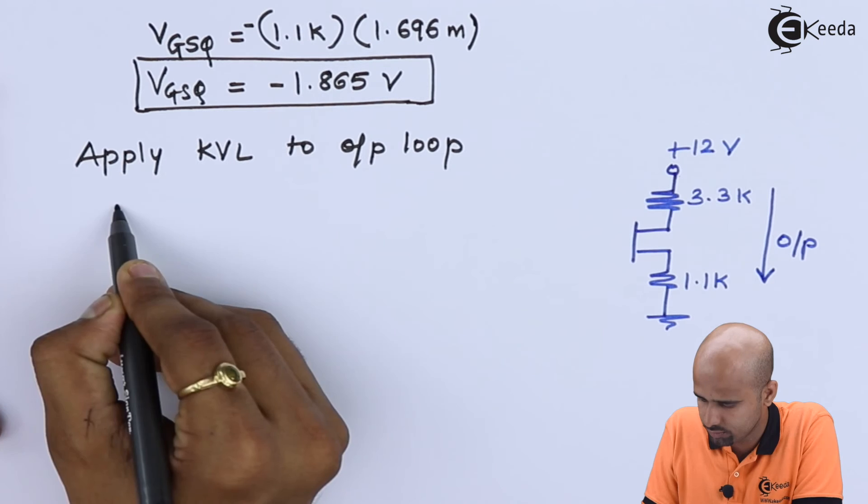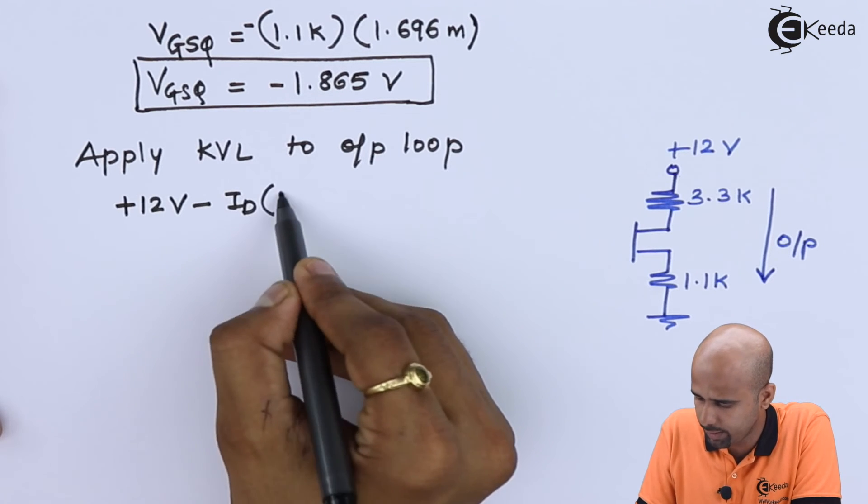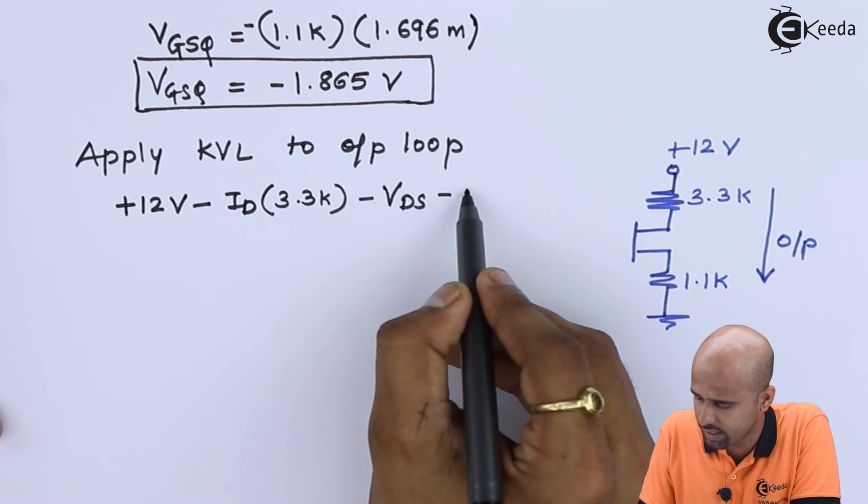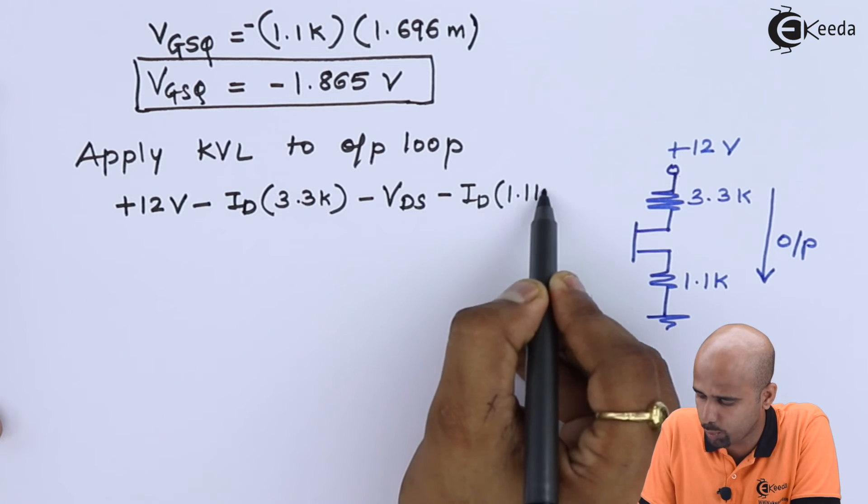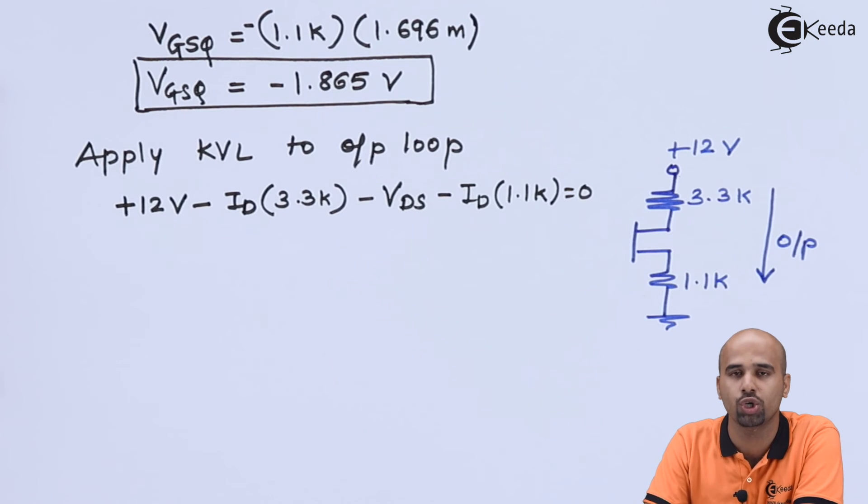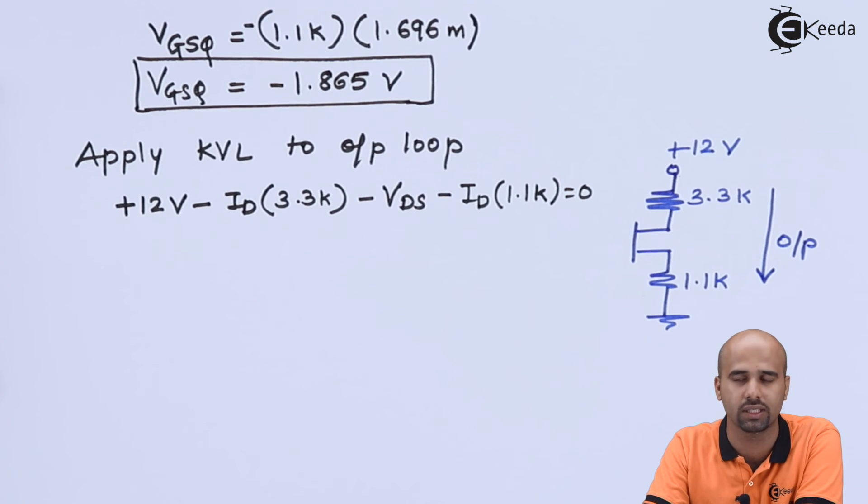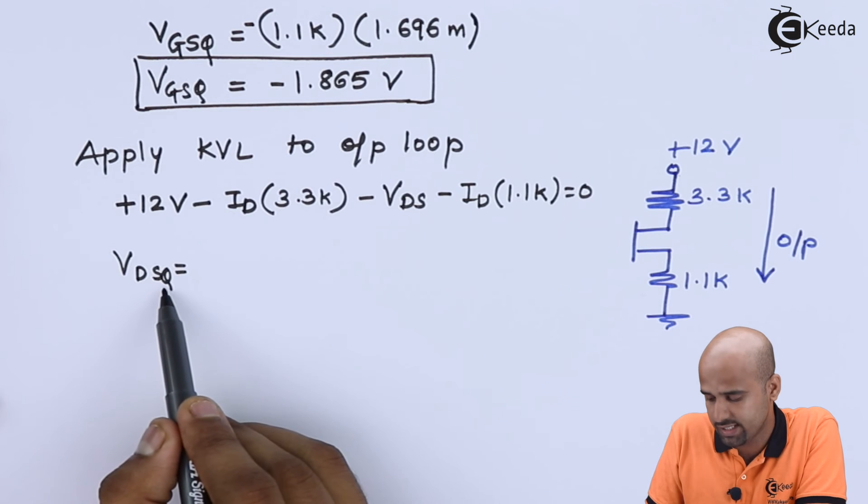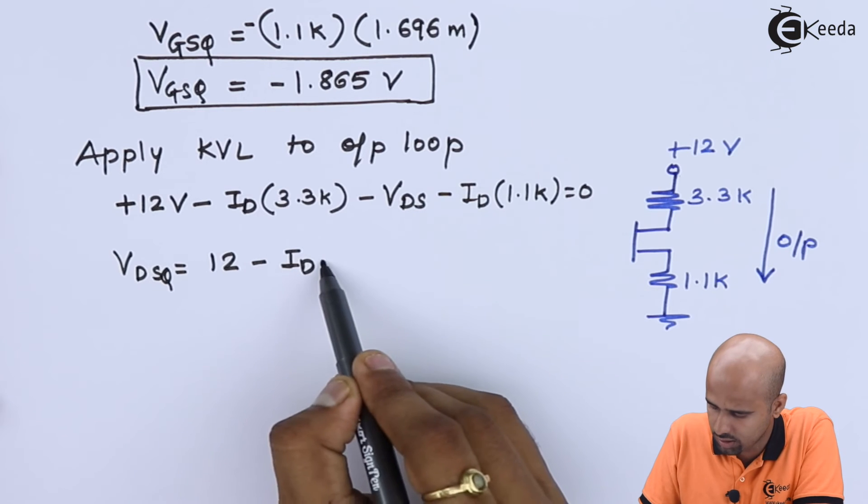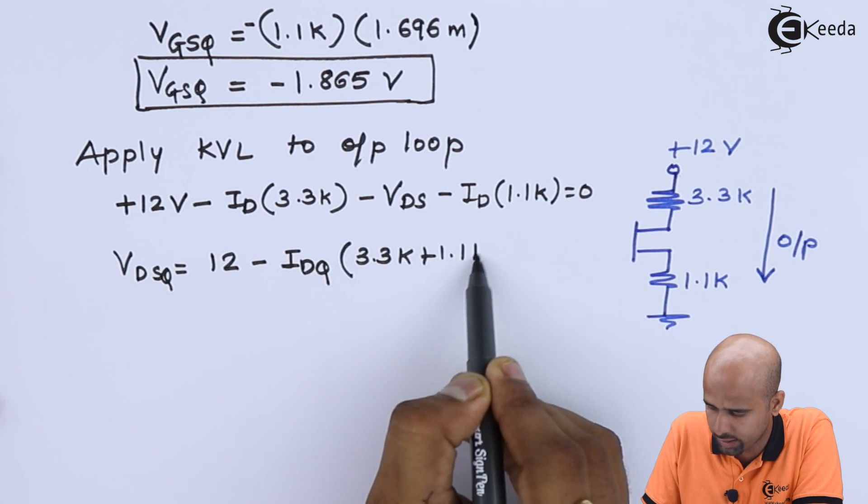We will start from 12, we will reach to ground. Plus 12 volts minus ID multiplied by 3.3k minus VDS minus ID multiplied by 1.1k is equal to 0. Mind well, as IG is equal to 0, your drain current and source current is exactly equal, exactly equal, unlike BJT.